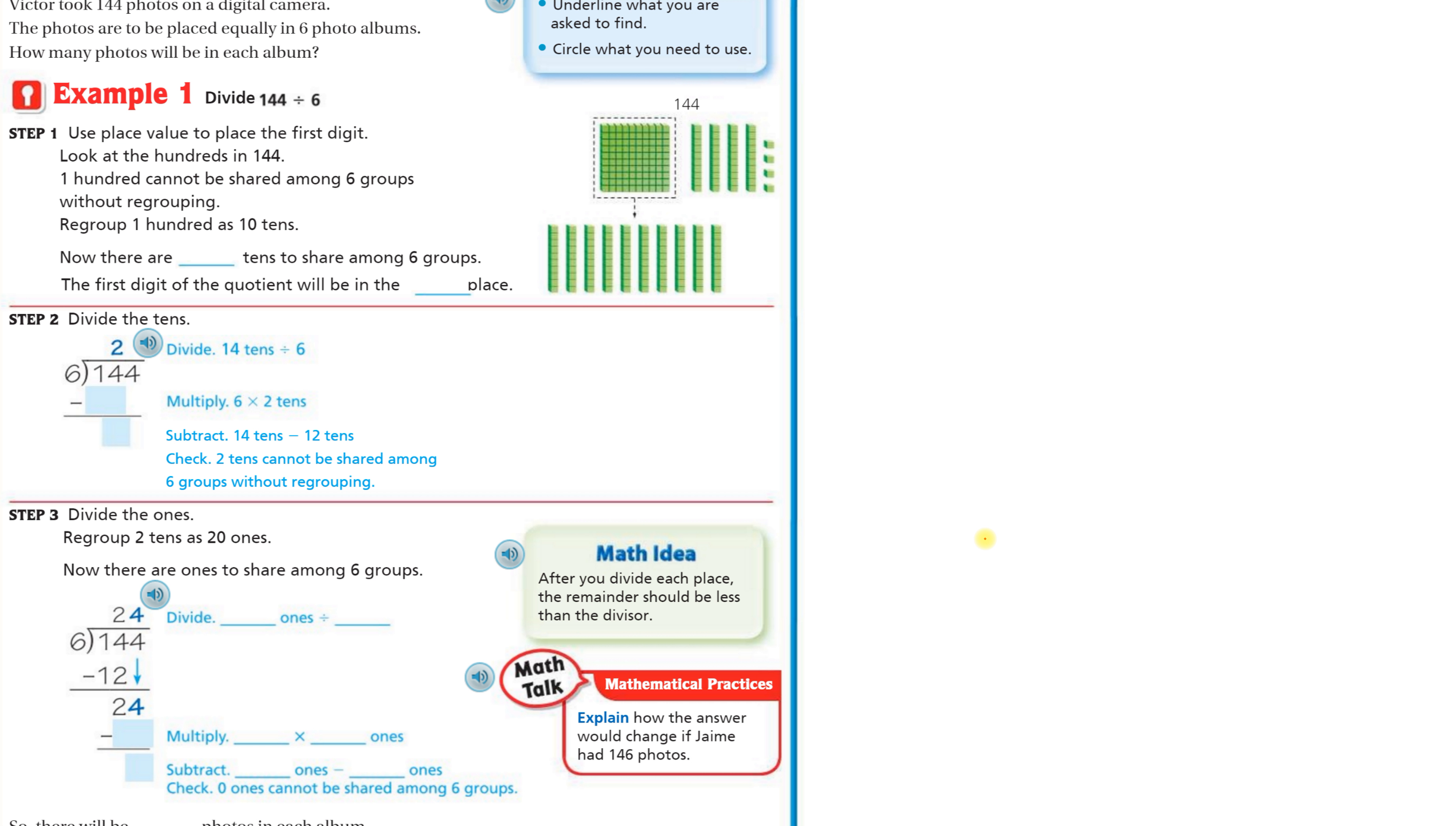Victor took 144 photos on a digital camera. The photos are to be placed equally - remember, that's one of those key words. Equally, same amount. That tells us it's division. In six photo albums. And then our question is, how many photos will be in each of the six albums?